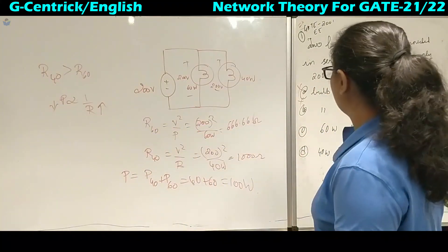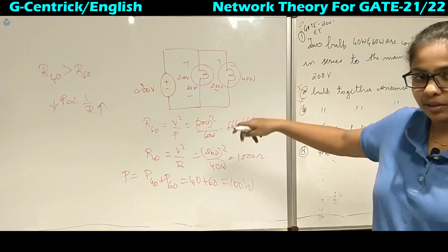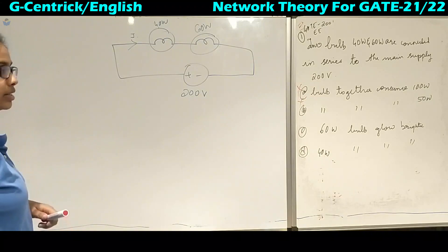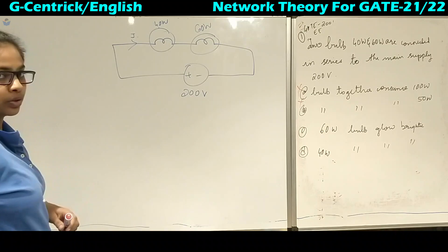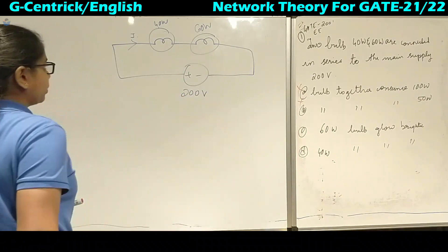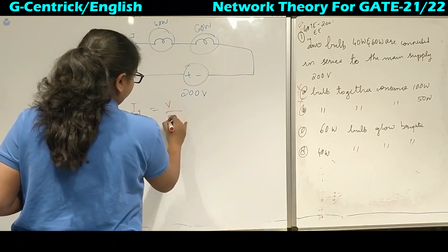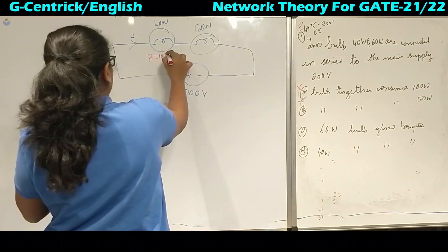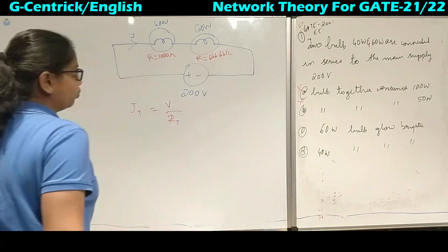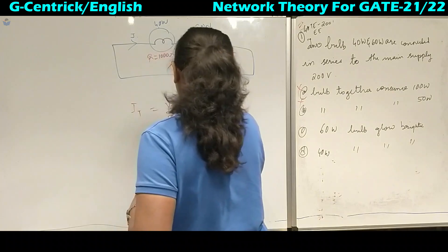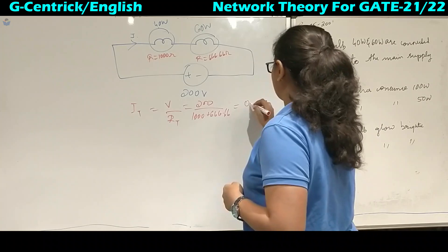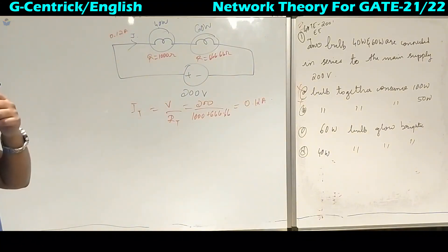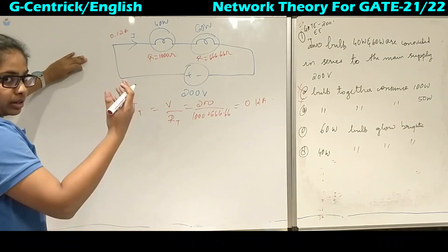So the first two options (100 watt and 50 watt total consumption) are wrong for this series problem, leaving us with the last two options. When the 40 watt and 60 watt bulbs are connected in series, we need to find the total current. I_total = total voltage / total resistance = 200 / (1000 + 666.66) = 0.2 amperes. The total current in the circuit is 0.2 amperes.